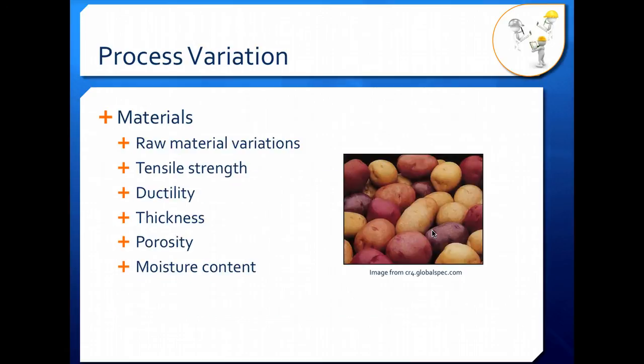Material variation comes from raw material variations such as tensile strength—how much force it takes to pull something apart—ductility, or how much something can stretch before breaking, thickness of your product, porosity, and moisture content. There are more variations than seen here, but these are just examples. Taking a look at these potatoes, they probably have differences in moisture content, size, and carbohydrate content. It's natural to get this kind of variation with your materials.